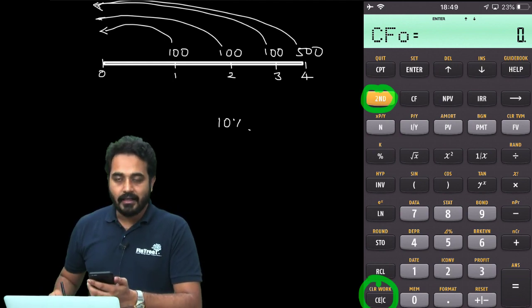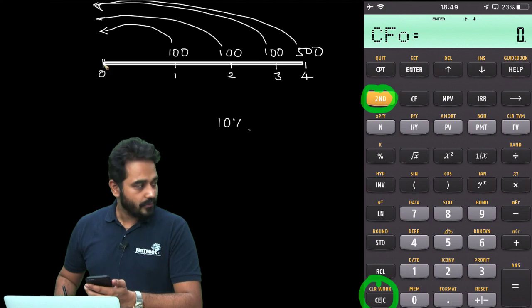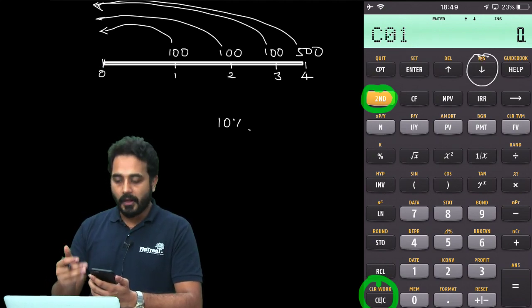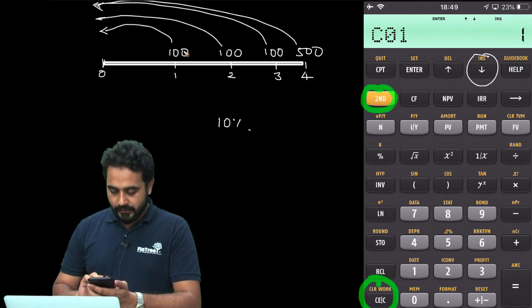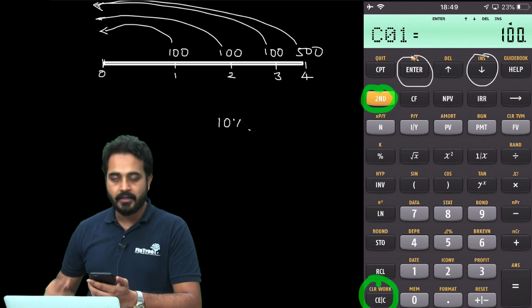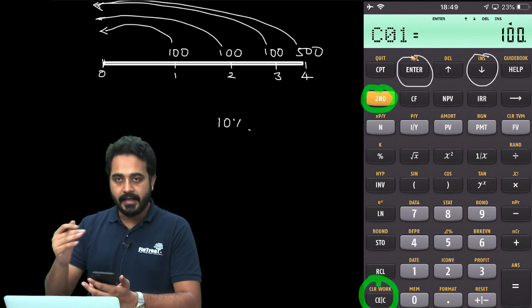So, I am going to press 2nd, I am going to press clear work and now if there was anything saved, that is being deleted. Once that is done, I will start inserting the numbers. So, in cash flow 0, there is nothing. So, I am going to press the downward arrow. Now, we have cash flow 1. Cash flow 1 is 100. So, I will say 100, enter. It is important that we press the enter button after every number. So, 100, enter.